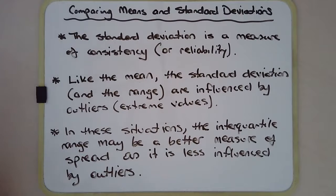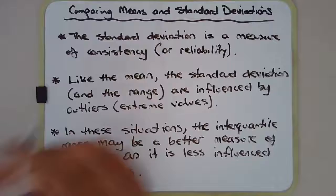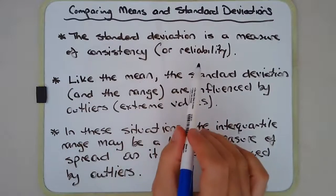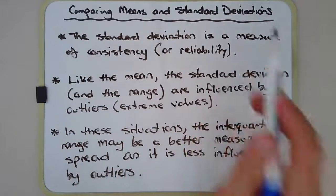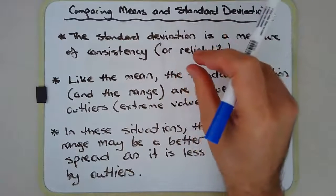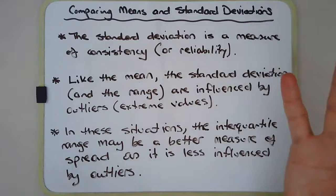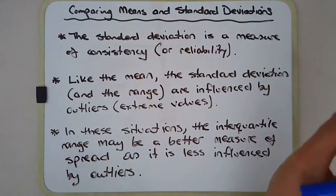Let's go through some of these points quickly. The standard deviation is a measure of consistency or reliability. Recall that the smaller the standard deviation, the more consistent and reliable the set of scores, or the closer the set of scores are to each other.